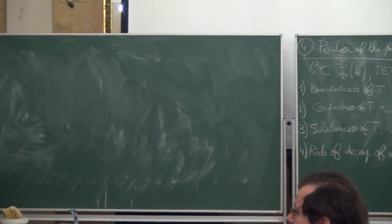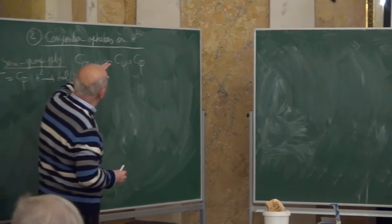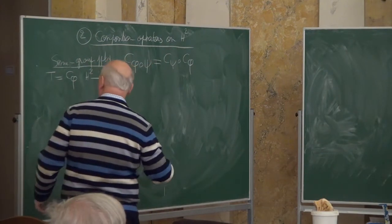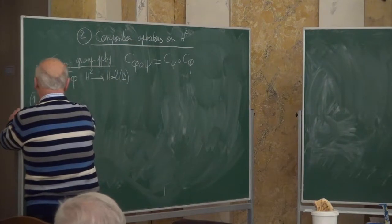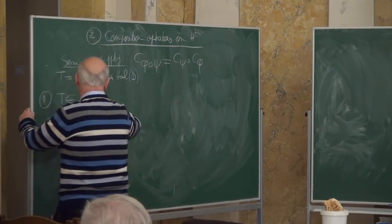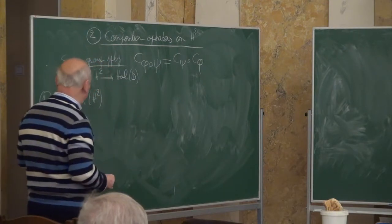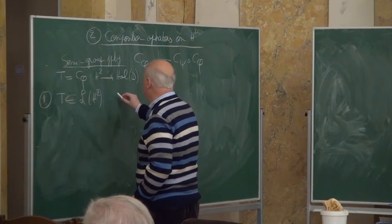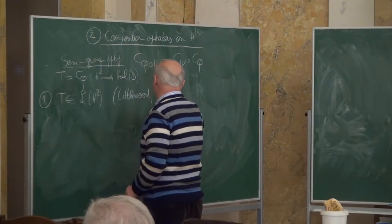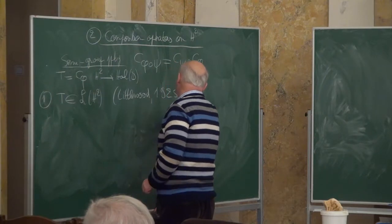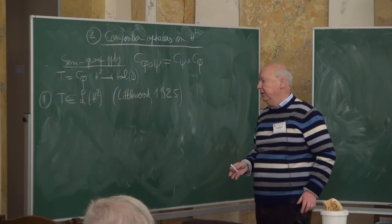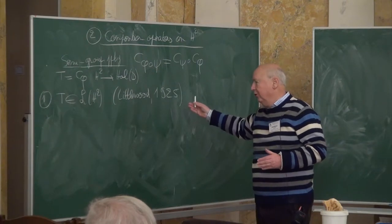So it's not clear that they are made of bounded operators. The first point is: is T always bounded, whatever phi is? This is a bounded operator. This is due to Littlewood, and this is fairly old stuff, 1925 or something like that. It is called the Littlewood subordination principle, and it's both old and highly non-trivial.